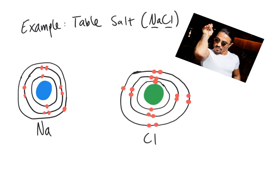What makes these atoms neutral is that they have the same number of protons and electrons. Sodium has an atomic number of 11, meaning it has 11 protons, and if you count up the electrons drawn here, there are 11 as well — so the positive and negative particles are equal, making it a neutral atom. Chlorine has an atomic number of 17, and counting up all its electrons, there are 17, making it a neutral atom too.